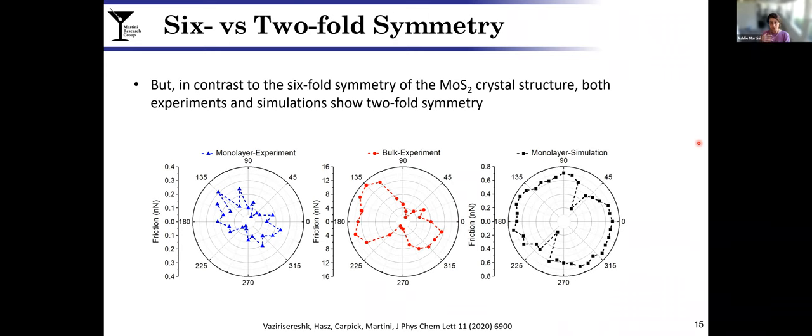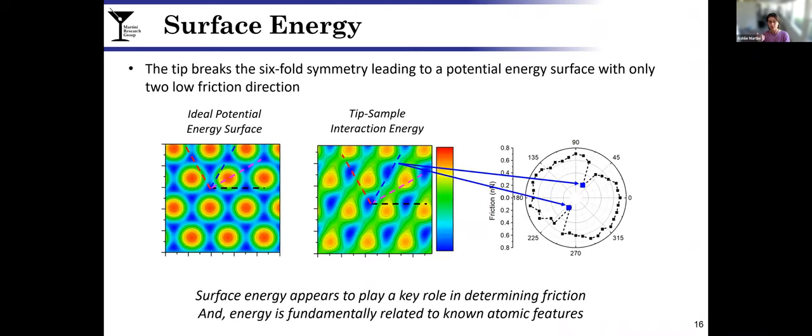We took this direction-dependent study one step further and scanned in all of the possible different directions from a center point on monolayer and bulk MoS2 in experiments, and the monolayer study is shown for simulations. These are radar plots where the directions indicate the direction of sliding, and when you're further away from the center, that indicates higher friction. The key point here is that in all three cases we see two low friction directions and the rest high friction directions. So we're seeing twofold symmetry and a strong correlation between friction and the direction on which you slide relative to the crystallographic lattice.